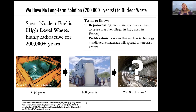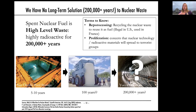One way to lessen the amount of waste is reprocessing — basically recycling the waste and reusing it as fuel. Reprocessing is illegal in the United States because the government has concerns about nuclear proliferation: the reprocessing process makes it easier to use the plutonium in the waste for weapons. Reprocessing is done in France and Europe but is not allowed in the U.S.